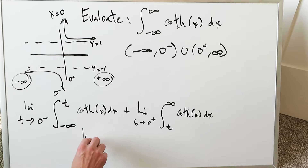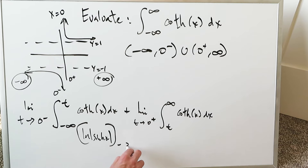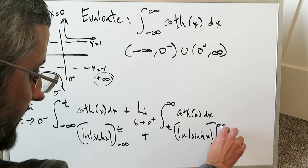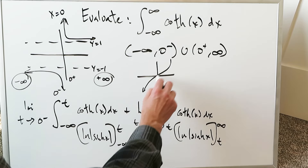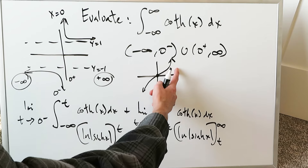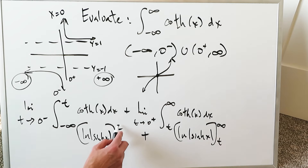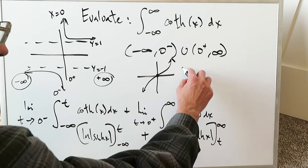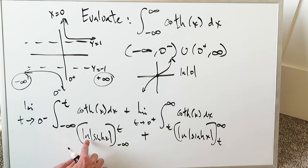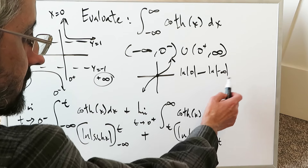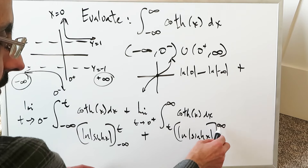The antiderivative of coth(x) is ln|sinh(x)|. Evaluating from minus infinity to t plus from t to infinity: for the first integral, the upper limit gives ln|sinh(t)| where t → 0, so sinh(0) = 0 and ln(0) is undefined. The lower limit gives sinh(−∞) = −∞, so ln|−∞| = ln(∞) = +∞, also undefined. Moving to the second integral, the upper limit gives sinh(∞) = ∞, so ln(∞) is undefined.